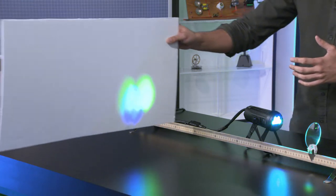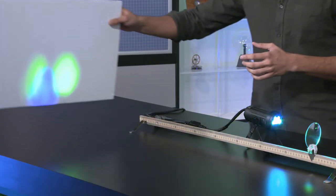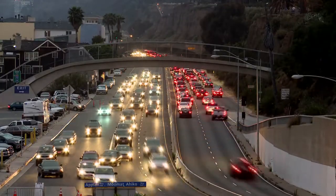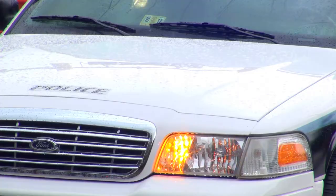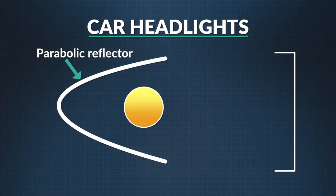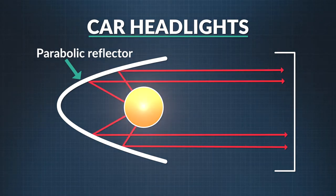An example of light placed at the focal point are headlights on a car. They use a curved mirror to maximize their light. These mirrors are parabolic — slightly different than the spherical mirrors we've been using, but you can see the same effect. There's a lamp at the focal point, which allows all the light that strikes the surface of the mirror to be projected outward, maximizing the light hitting the road in front of the car.